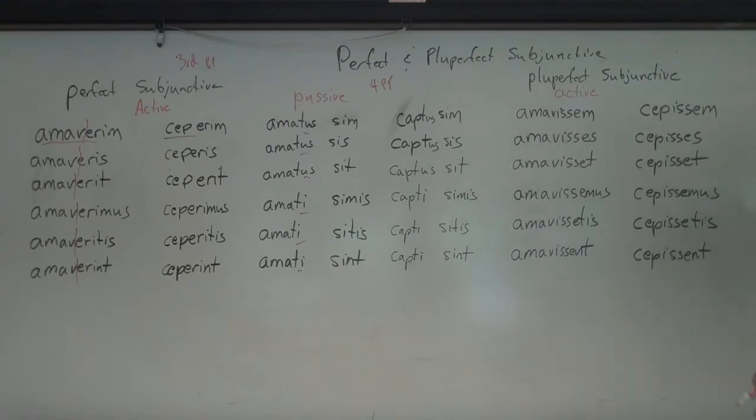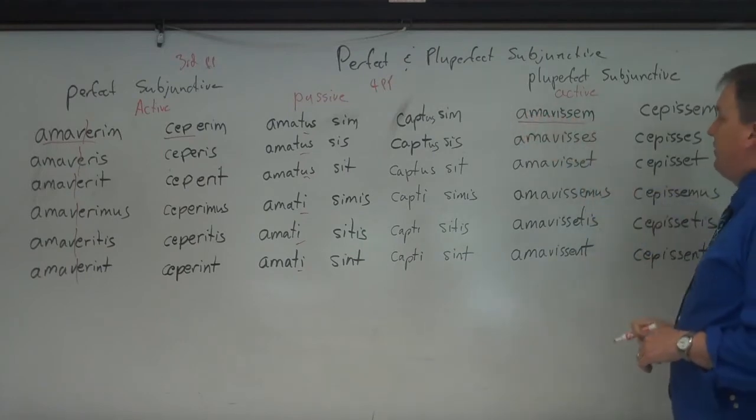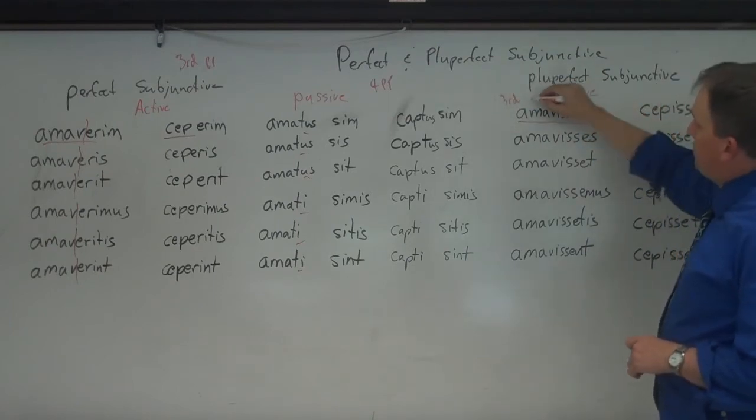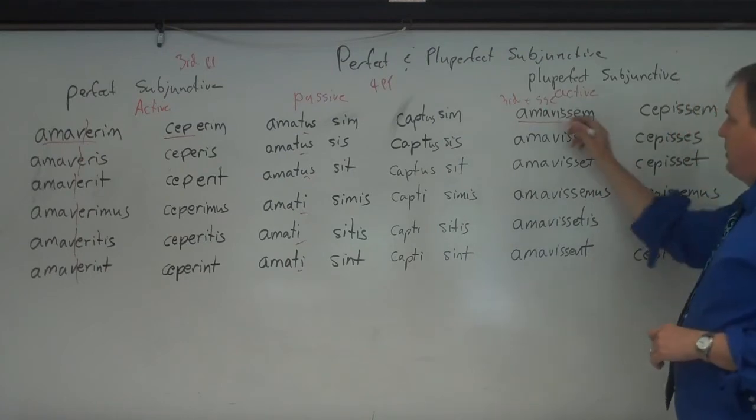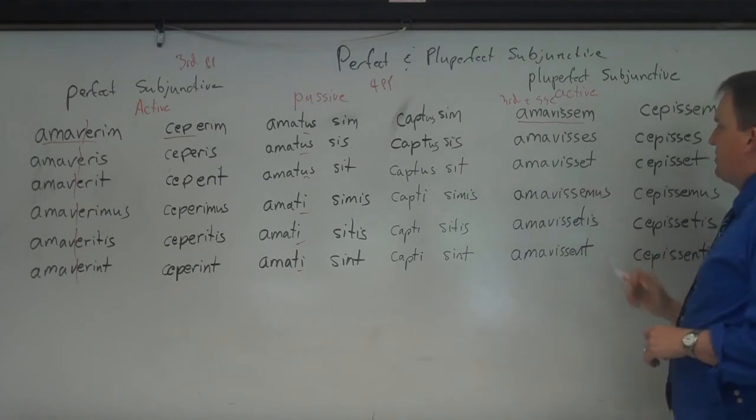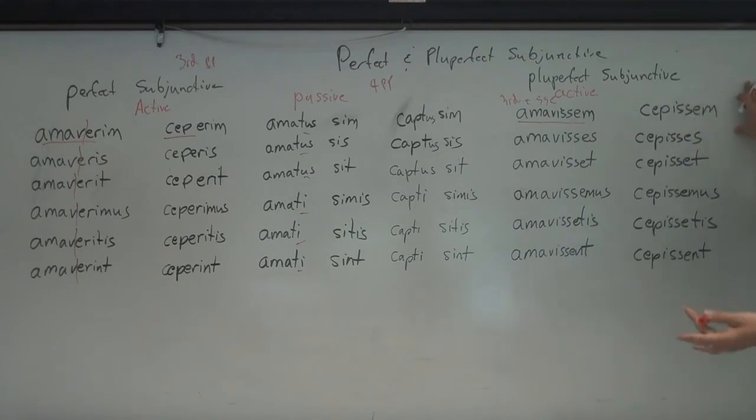Pluperfect is the same for all conjugations. So what you do with this is you take the perfect infinitive, and the perfect infinitive is just the third principal part, and this is for the active, of course, third principal part plus esse. And you go amavisse, and you add, you take the infinitive, and then add the endings: m, s, t, mus, tis, and nt. So amavissem, amavisses, amavisset, amavissemus, amavissetis, amavissent. And then for the pluperfect here for capio again, would be cepisse. You just take the third principal part, f-i-s-s-e, and then m, s, t. So you pick the perfect infinitive and add the endings.